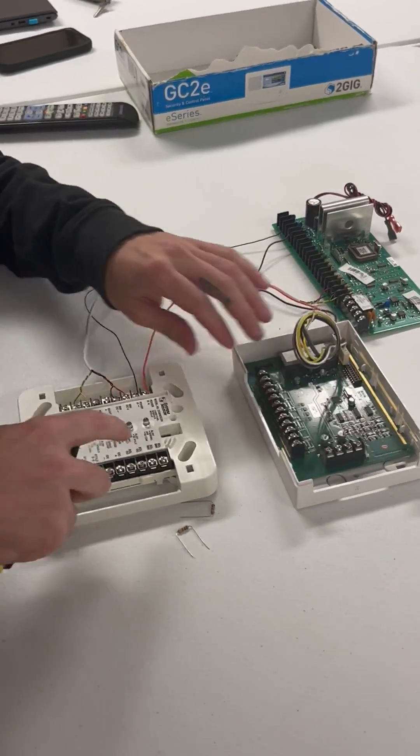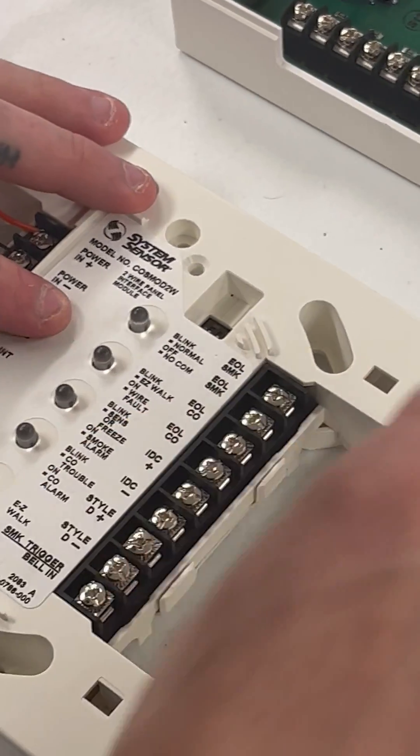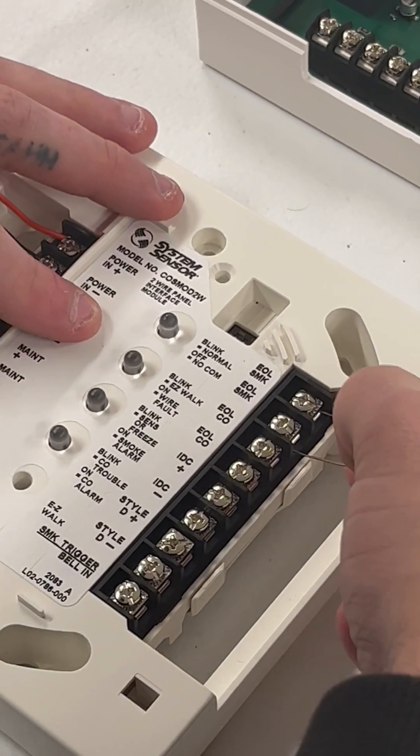So now right here on the cosmod where it says EOL smoke and EOLCO, this is where we're going to put our 2k resistors from the panel.